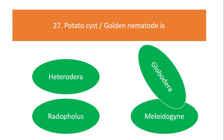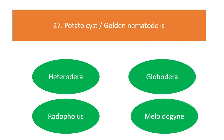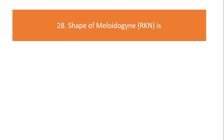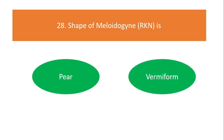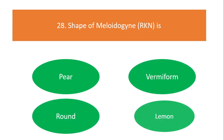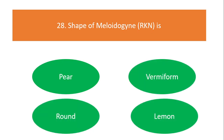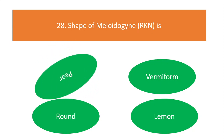Shape of Meloidogyne incognita, the root knot nematode: pear shape, vermiform, round, or lemon shape? The answer is pear shape.